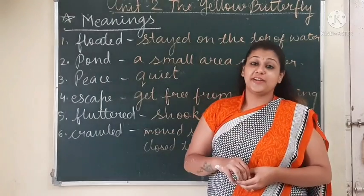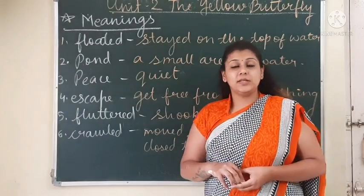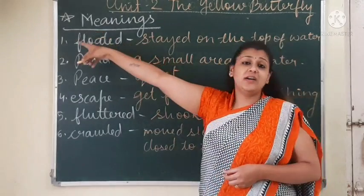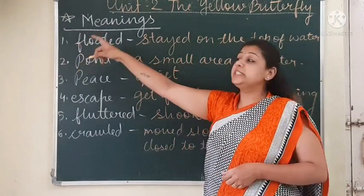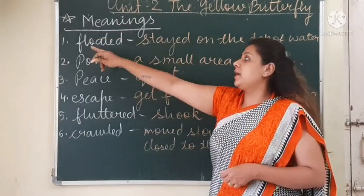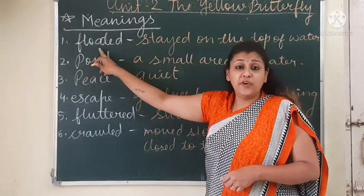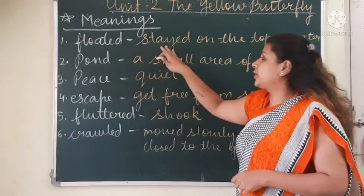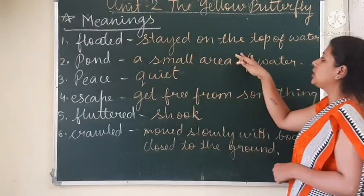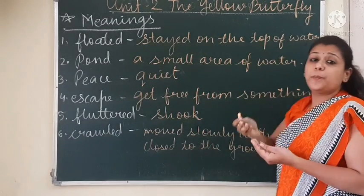Next we will write meanings. Put a star in the margin and write meanings. Number one: floated. Floated means stayed on the top of water.